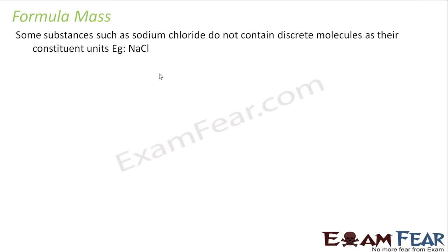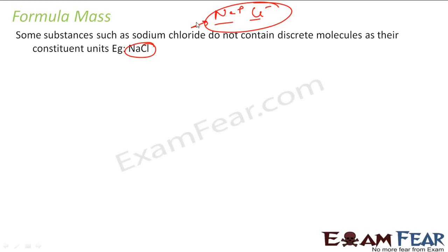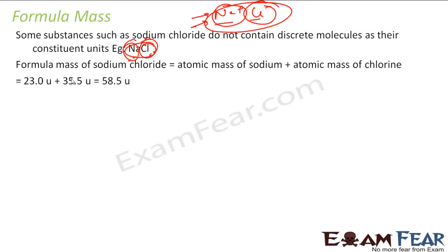Sometimes we have a formula rather than a discrete molecule — for example, sodium chloride NaCl. It acts as Na⁺ and Cl⁻ ions; the moment you put it in a solvent it separates. Since it does not contain discrete molecules, we call this the formula mass rather than molecular mass. For sodium chloride: sodium has atomic mass 23 and chlorine has 35.5, so 23 + 35.5 = 58.5 u. That is the formula mass of sodium chloride.